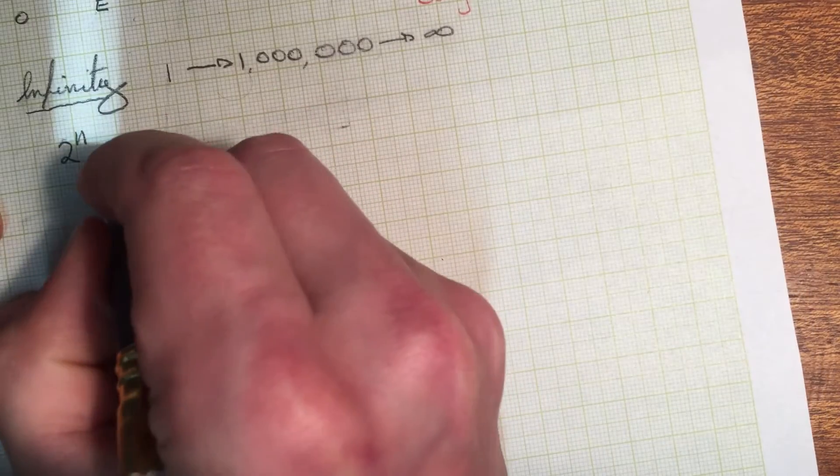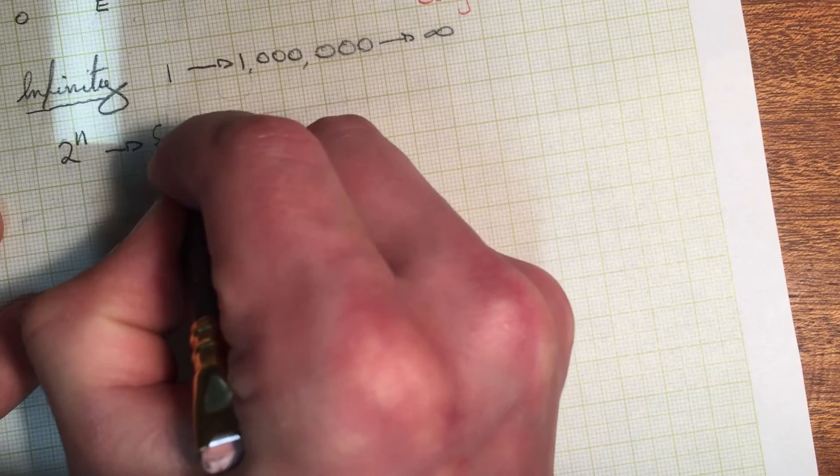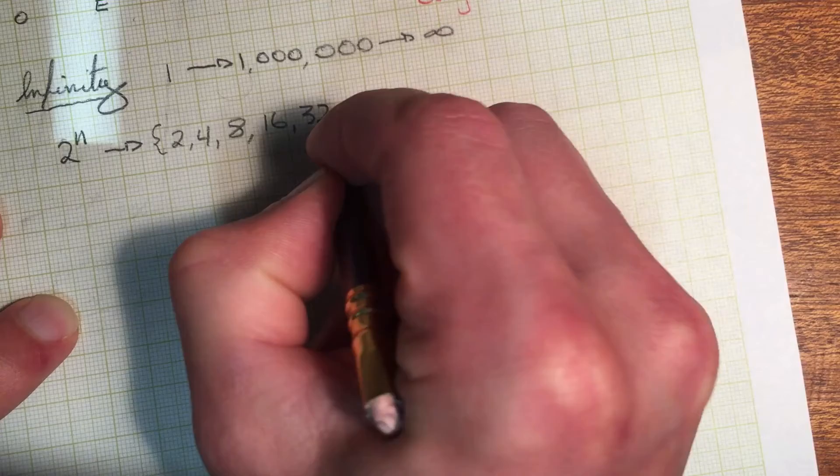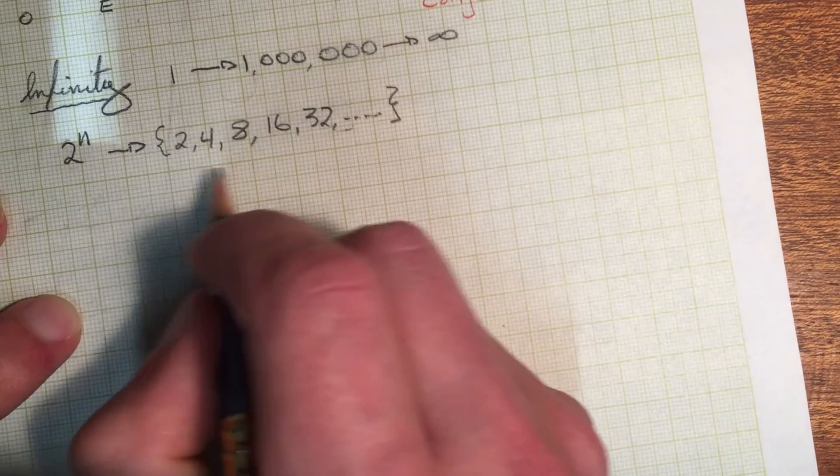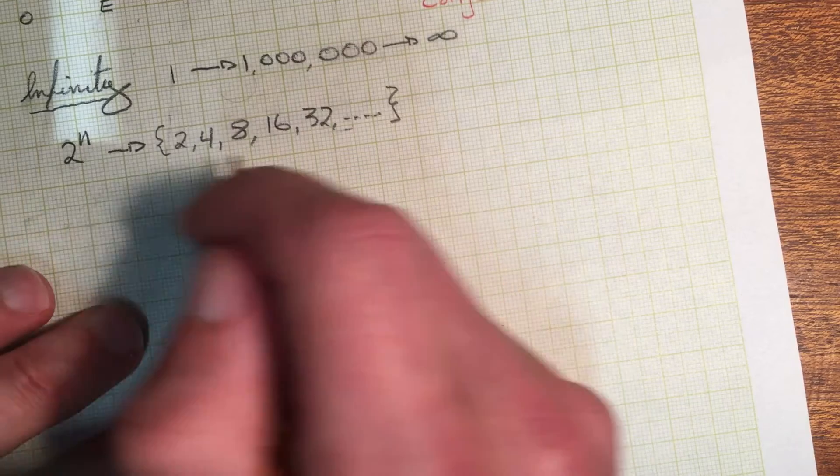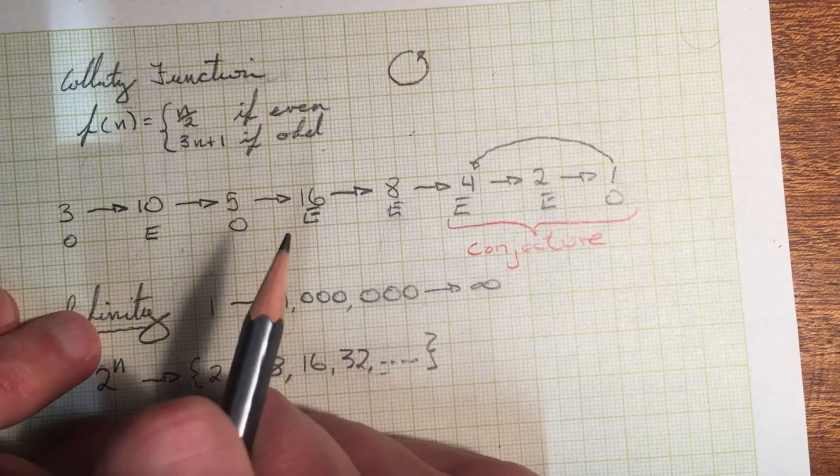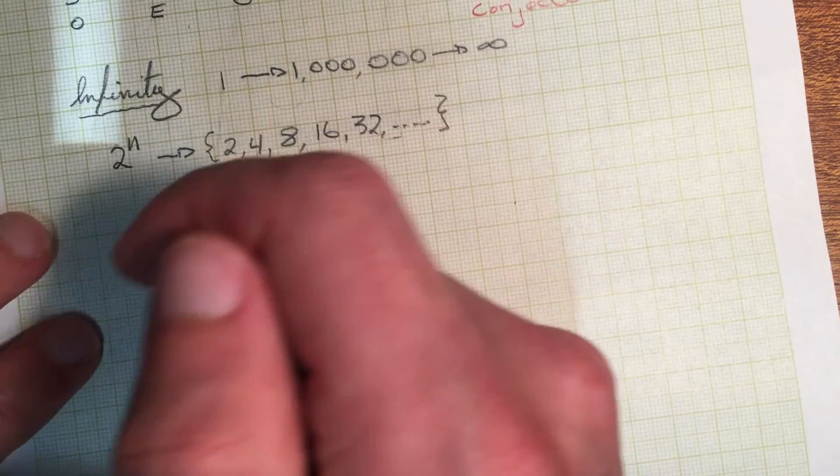So these are numbers two, four, eight, 16, 32, and so on, that under this conjecture, this class of numbers will always, always break down into this four to one cycle. And it's pretty easy to see that.